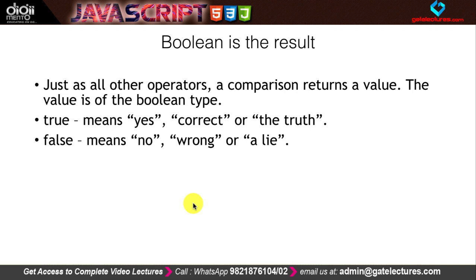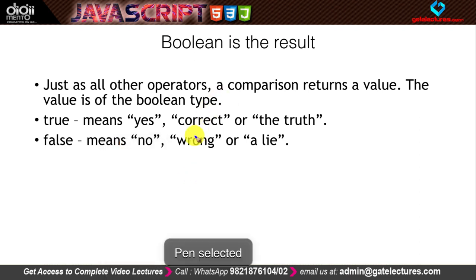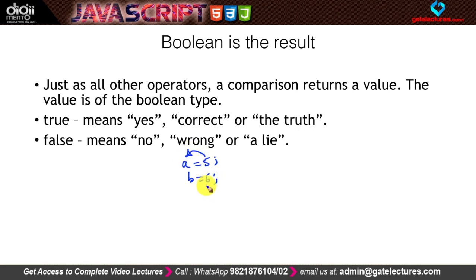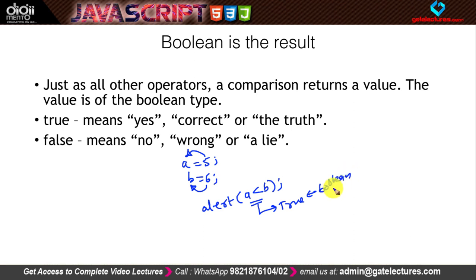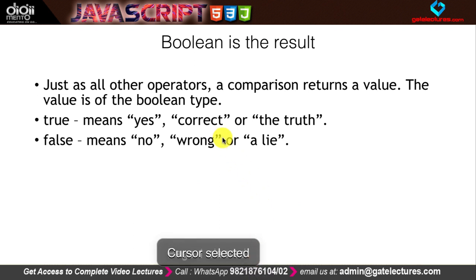The result of any comparison operation is always a boolean — either true or false. For example, if a equals 5 and b equals 6, then alert(a < b) will return true, which is a boolean value. Most comparison operators return true or false. In C, true means 1 and false means 0, but we will see what true and false mean specifically in JavaScript.